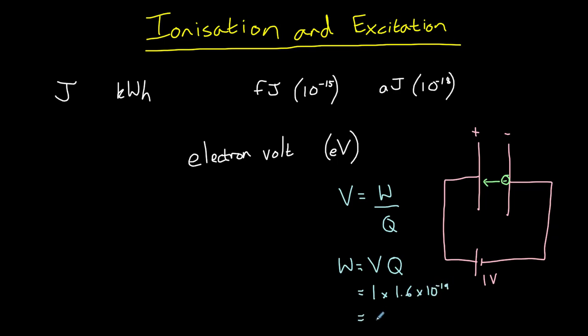So the work done, and therefore the definition of our electron volt, is 1.6 times 10 to the power of minus 19 joules.